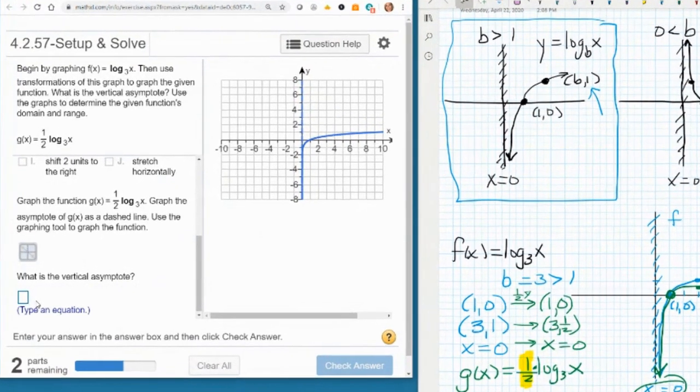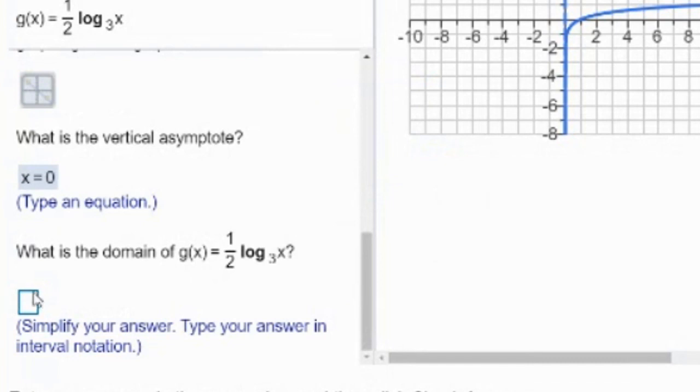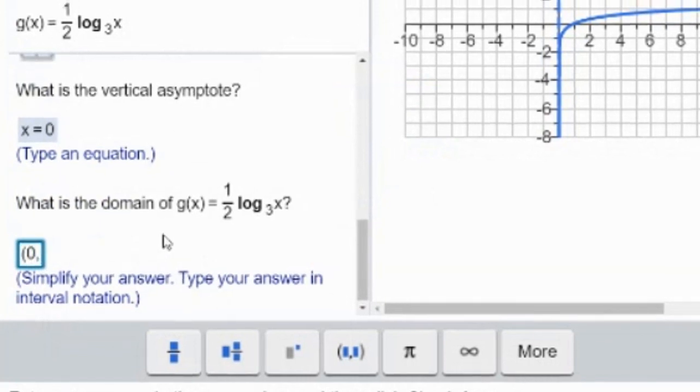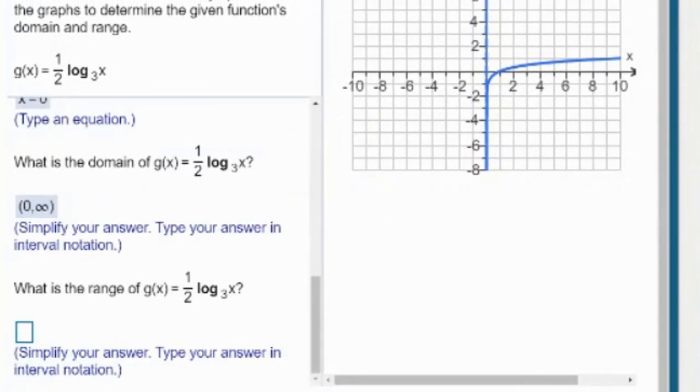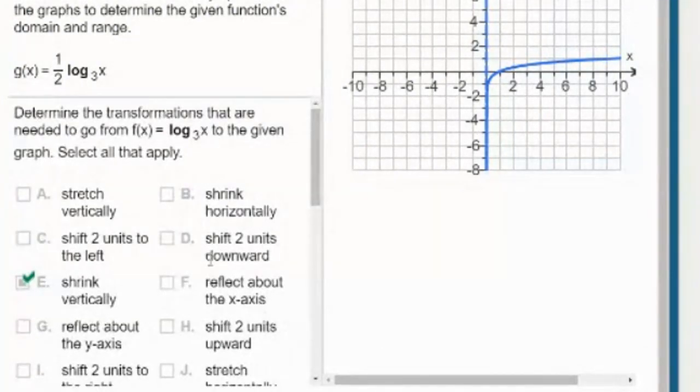What is the vertical asymptote? The vertical asymptote is x = 0. Domain is (0, infinity). Good. What would the range be? Negative infinity to positive infinity. Good. I hope you found this video useful. If you did, please remember to like it.